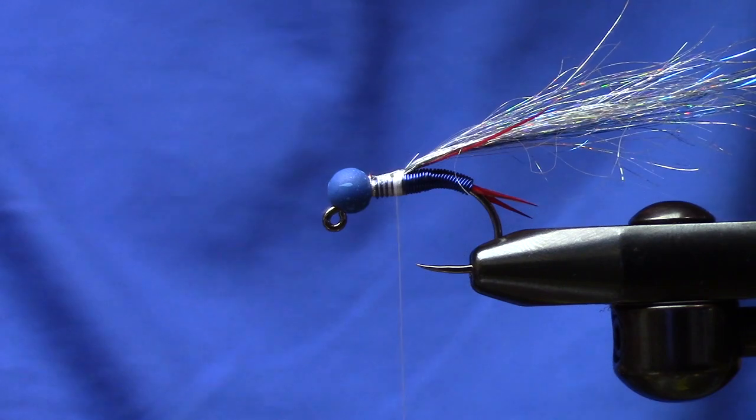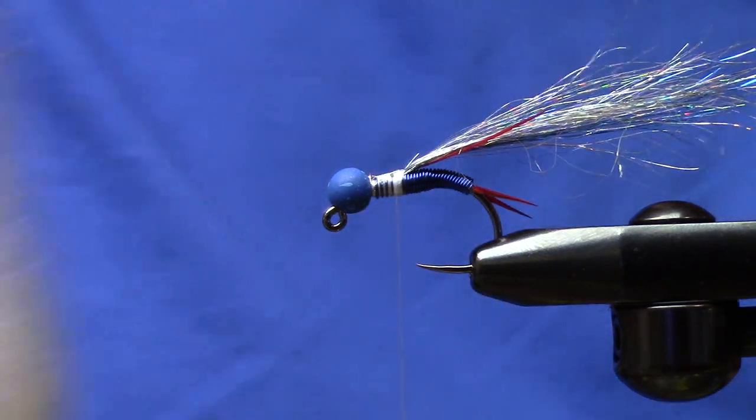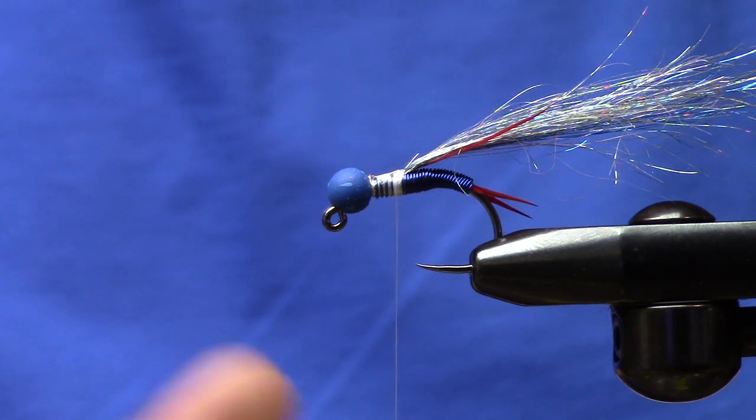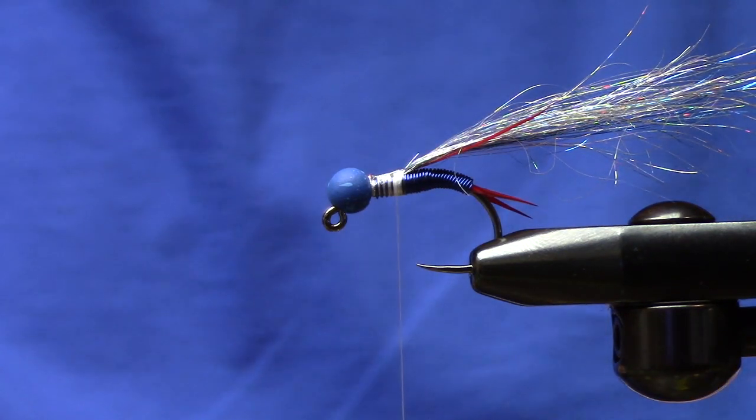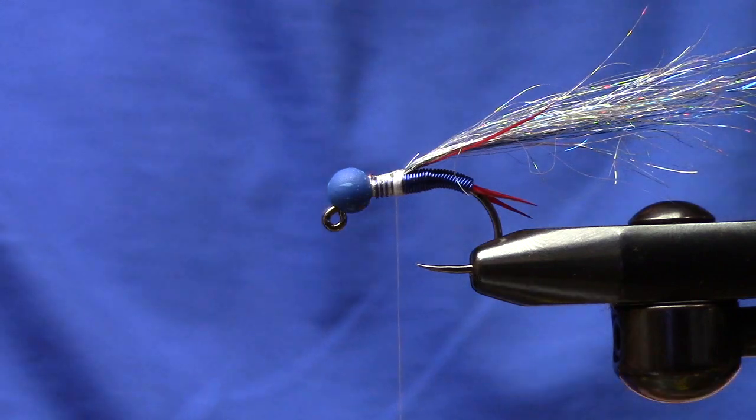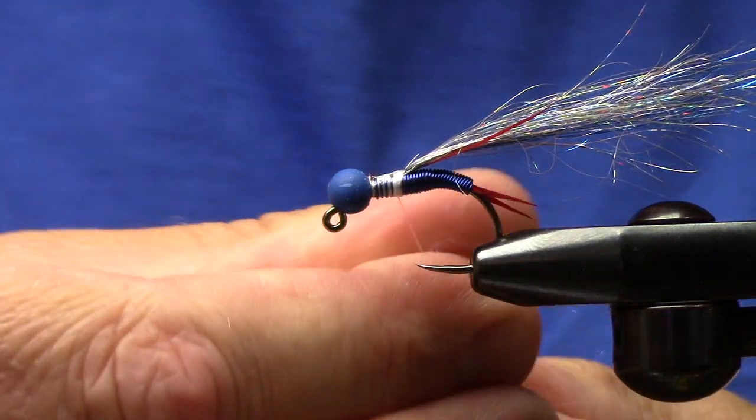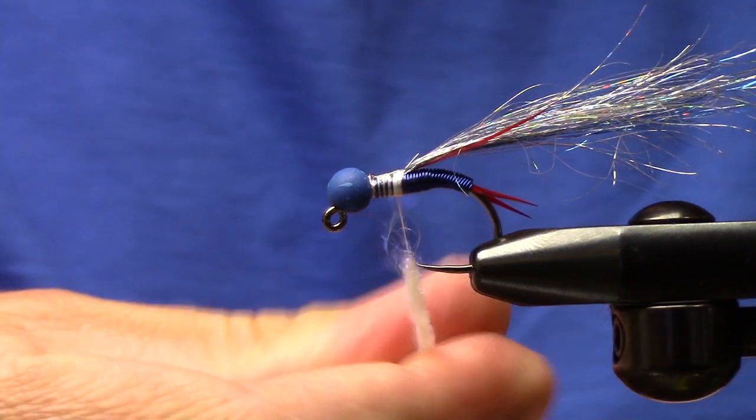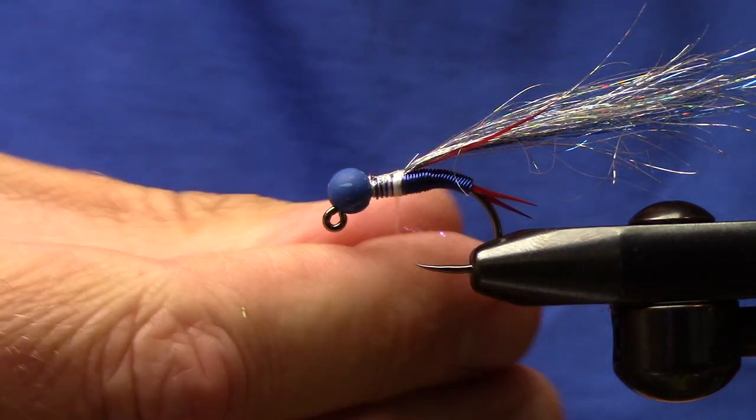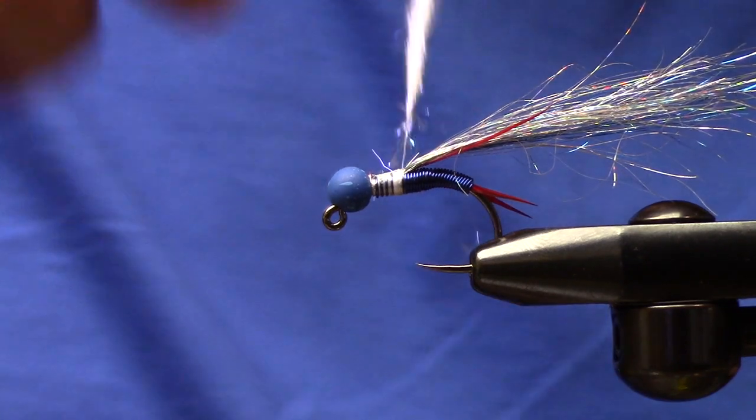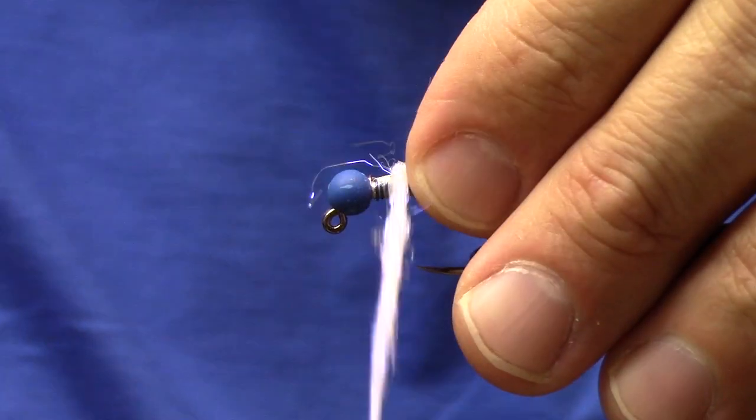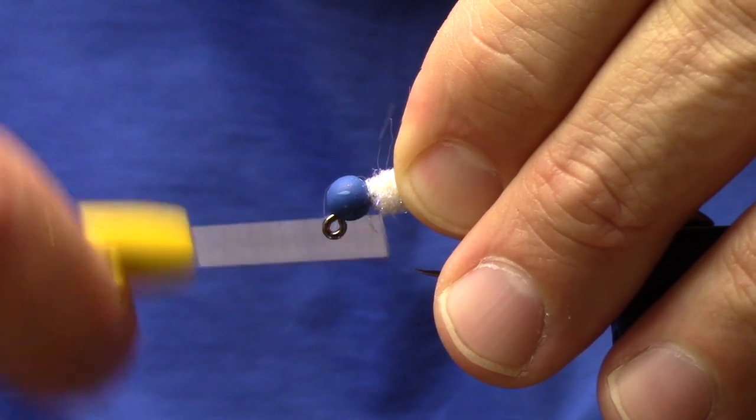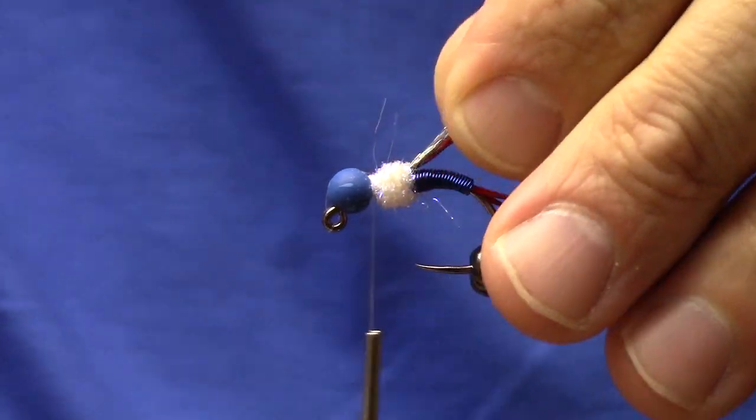From here what we're going to use for our thorax is some Ice Dub minnow belly. We're going to dub a hearty portion of this onto the fly, building a nice heavy duty thorax. I'm going to leave just a little bit of space right here.